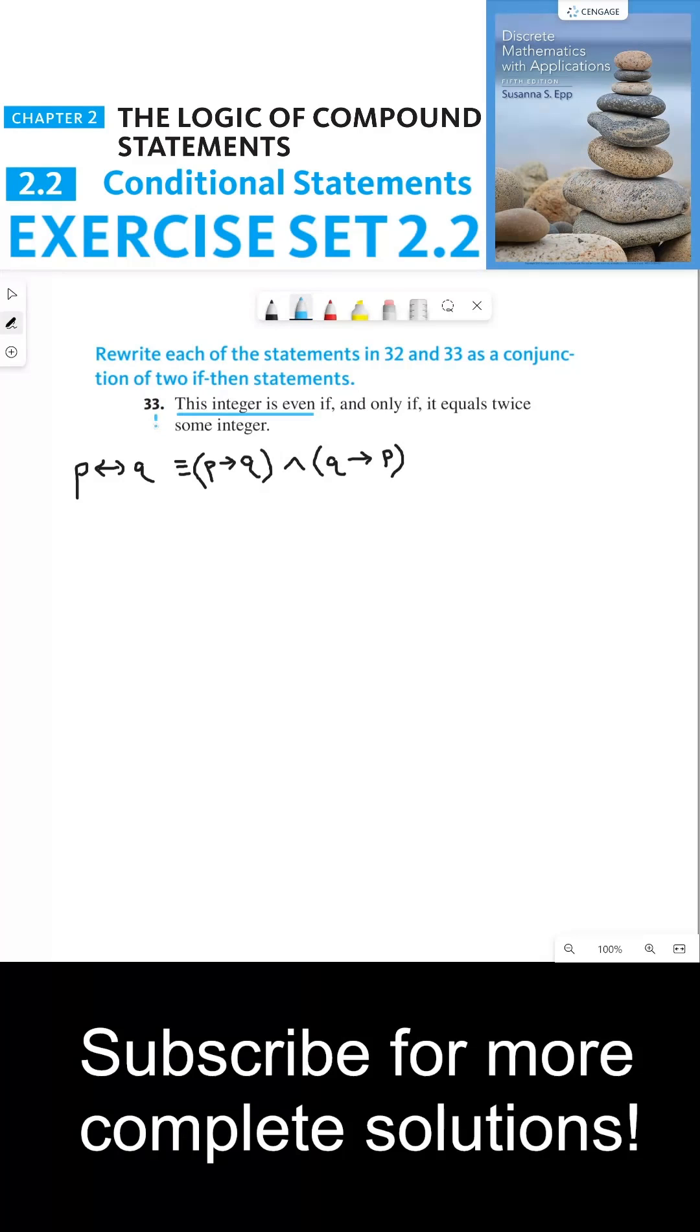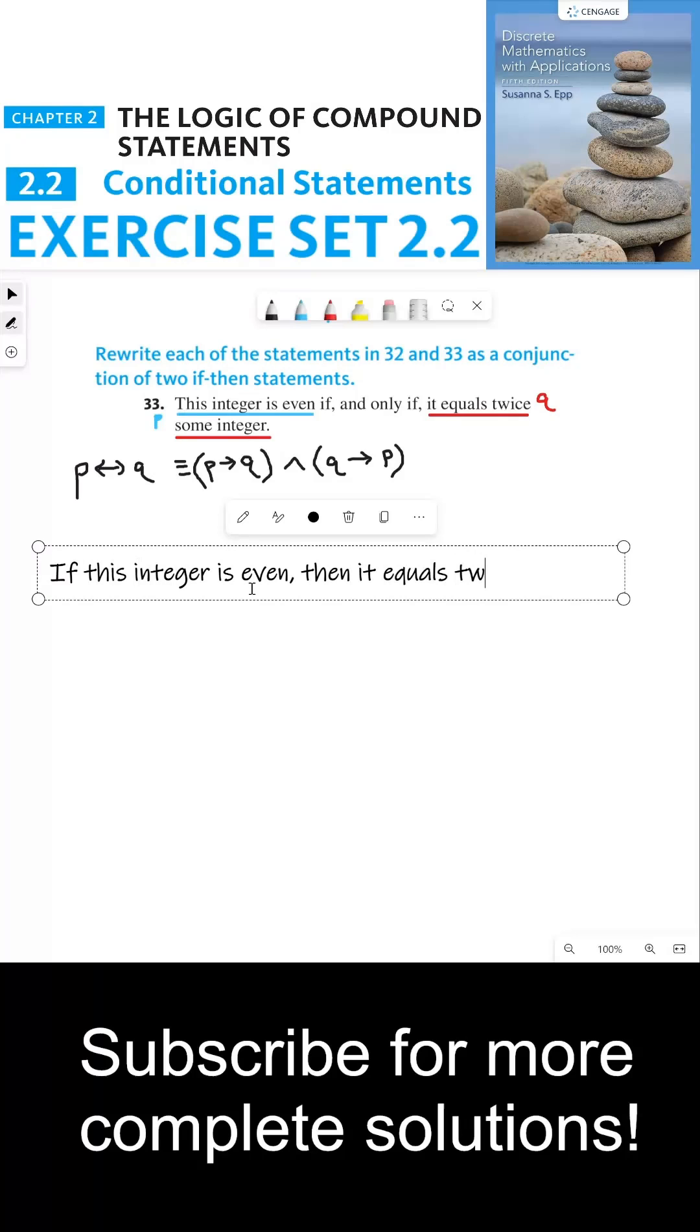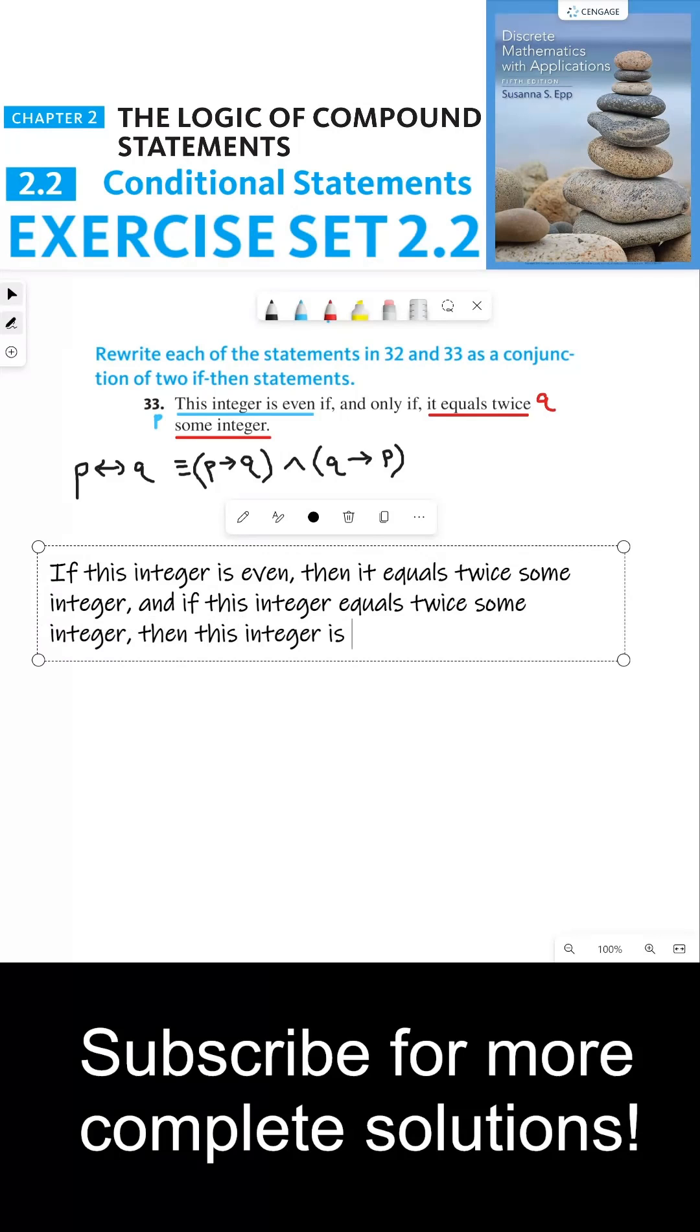So if we say this integer is even is our P and it equals twice some integer is Q, so now we can say that if this integer is even, then it equals twice some integer. And if this integer equals twice some integer, then this integer is even.